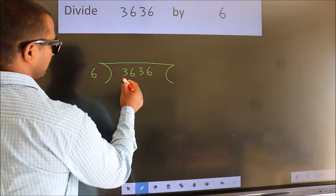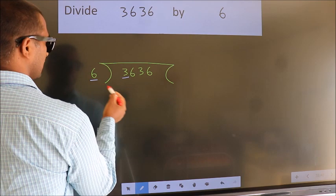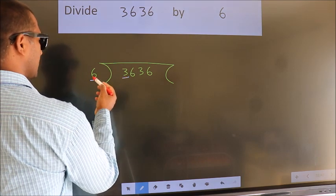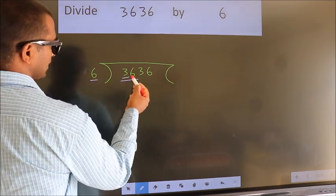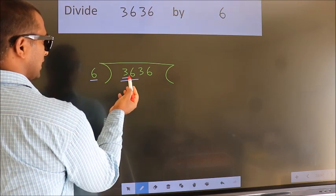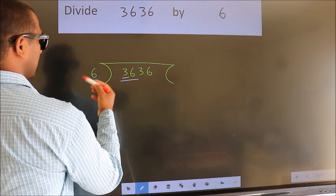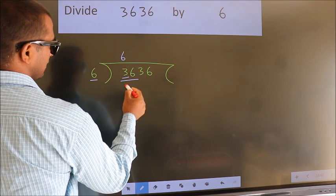Here we have 3. Here 6. 3 is smaller than 6, so we should take 2 numbers: 36. When do we get 36? In the 6 table. 6 times 6 is 36.